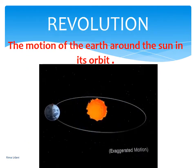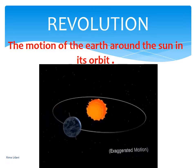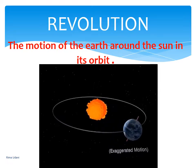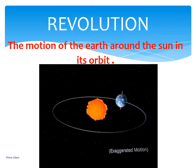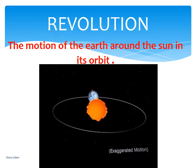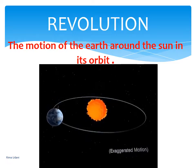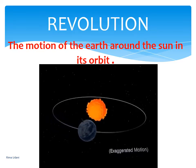Now that we have a grasp of rotation, let's move on to revolution. Revolution is the motion of the earth around the sun in its orbit. It takes 365 and one-fourth days — that is one year — to revolve around the sun. We consider a year as 365 days and ignore the six hours for the sake of convenience.